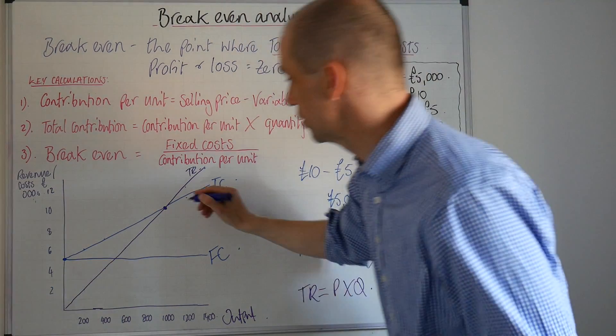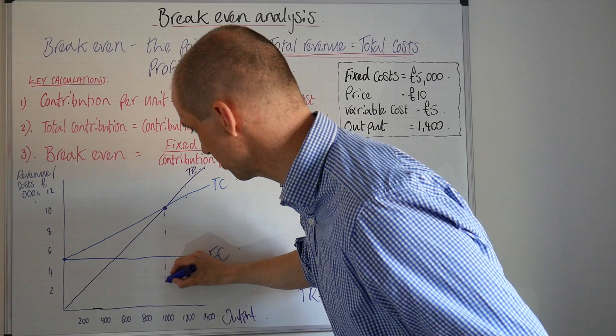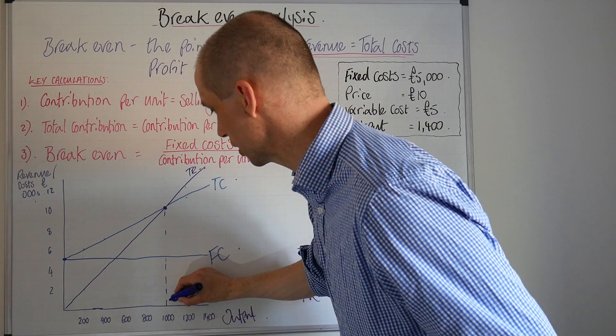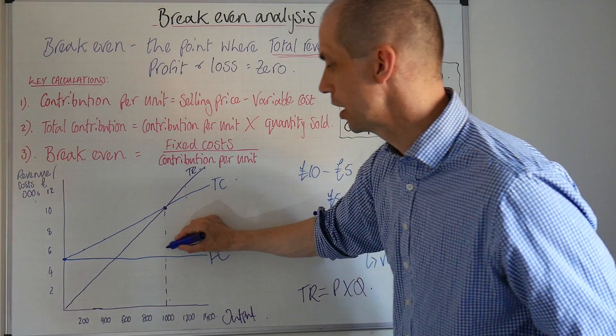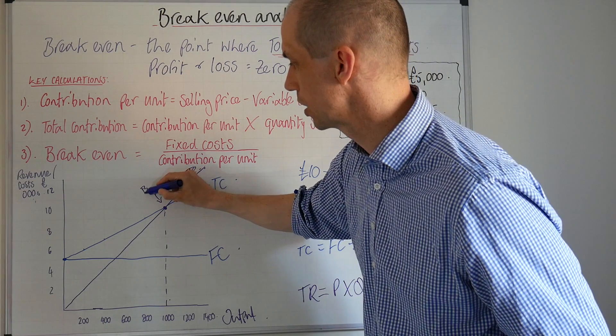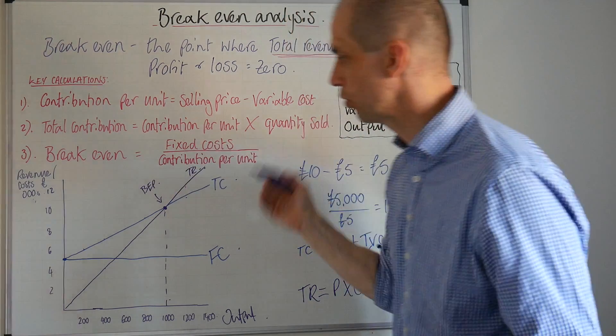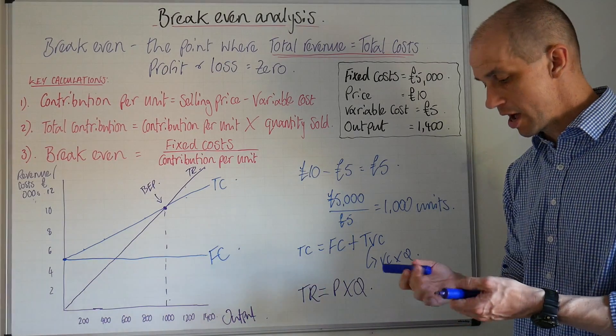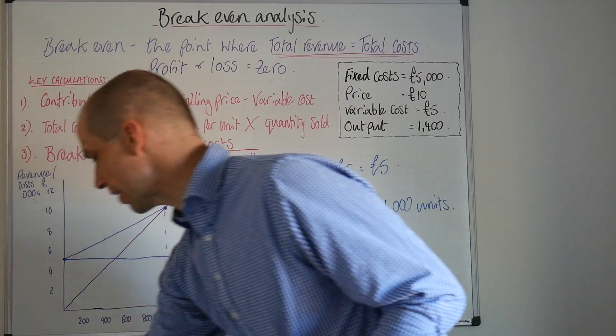There's our total revenue. This point here of course represents our break-even point. So that is the level at which we would break even. Let's just highlight that break-even point there it is.